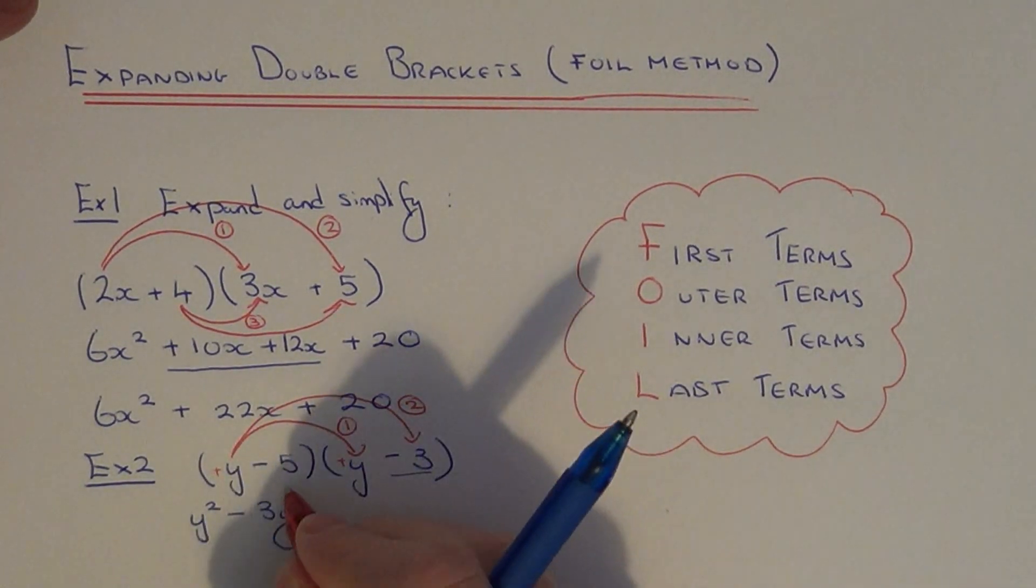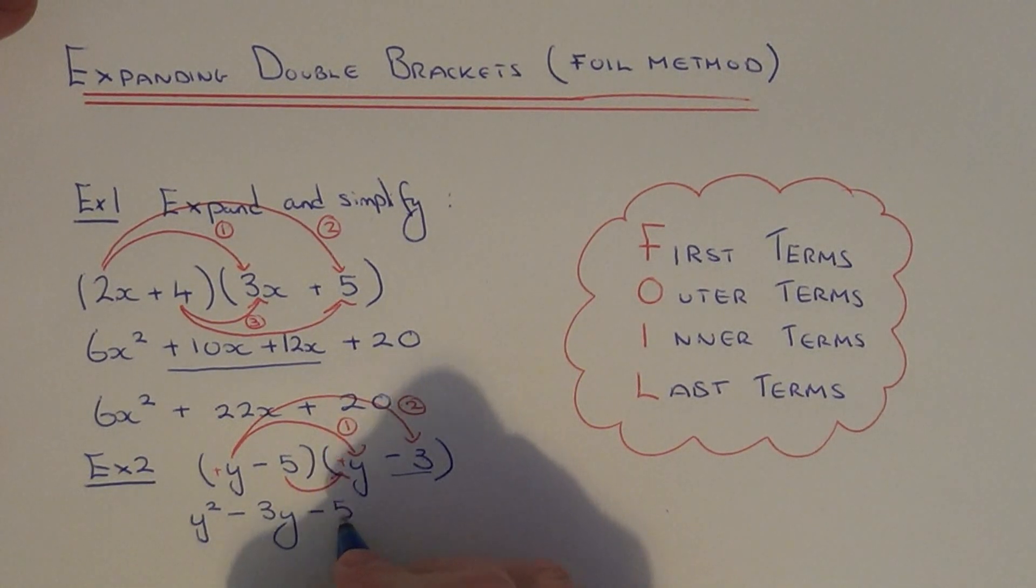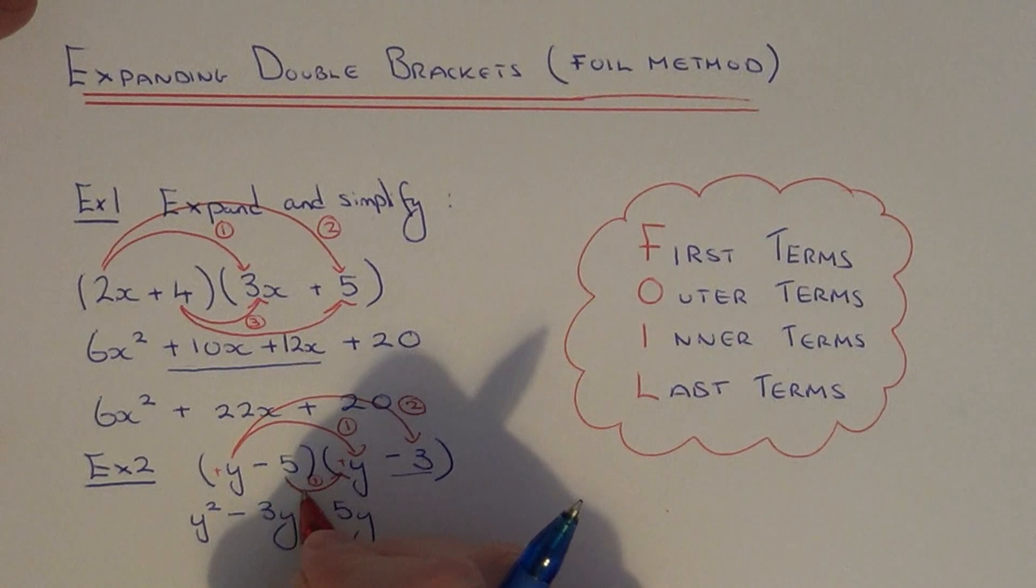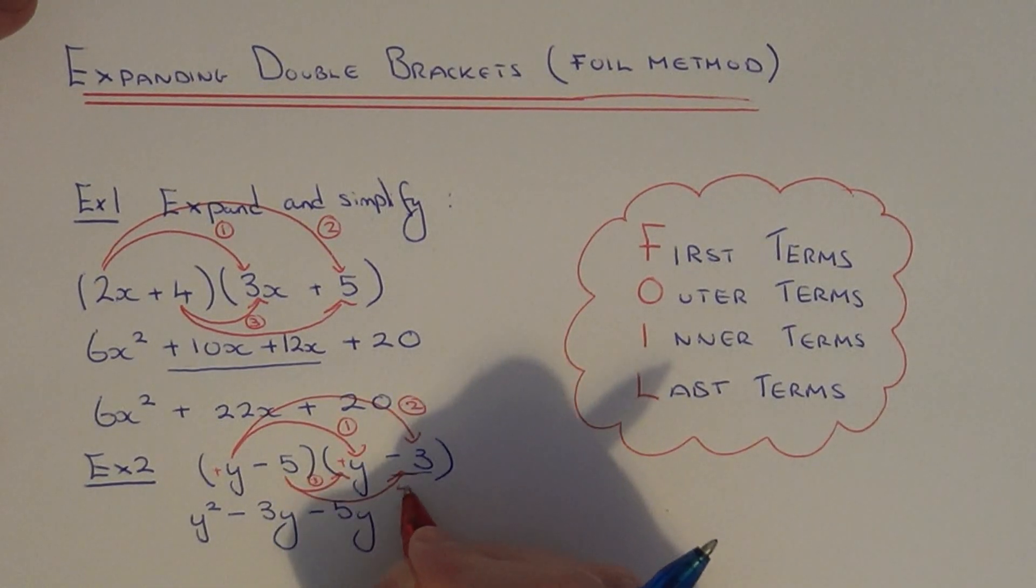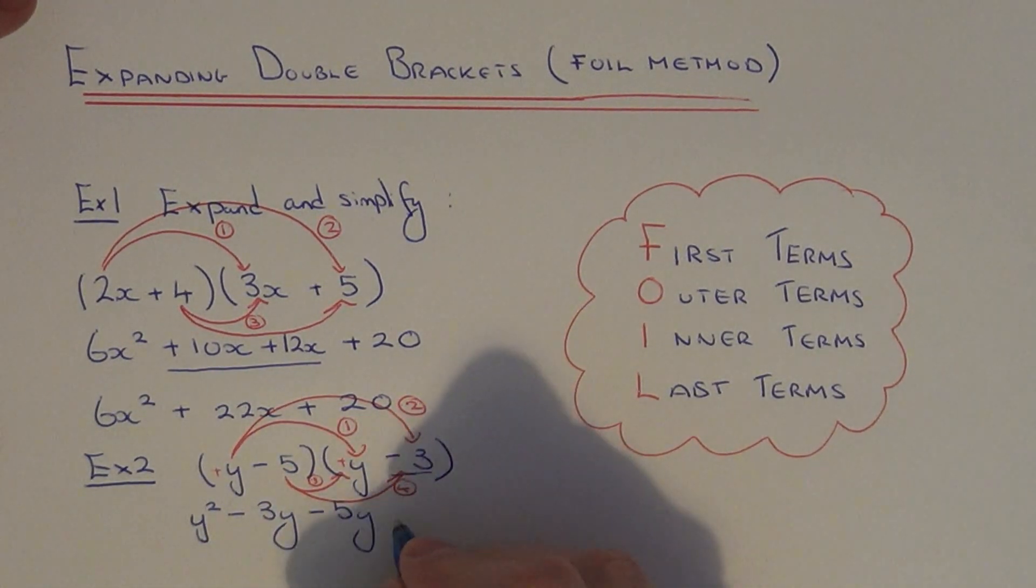Then multiply the inner two terms together. So minus 5 times y is minus 5y. And then finally multiply the last terms in each bracket. So you have minus 5 times minus 3. Remember two negatives multiplied together makes a positive. So that's plus 15.